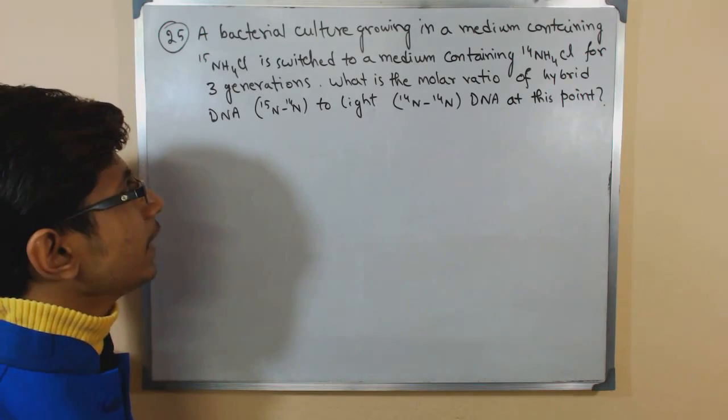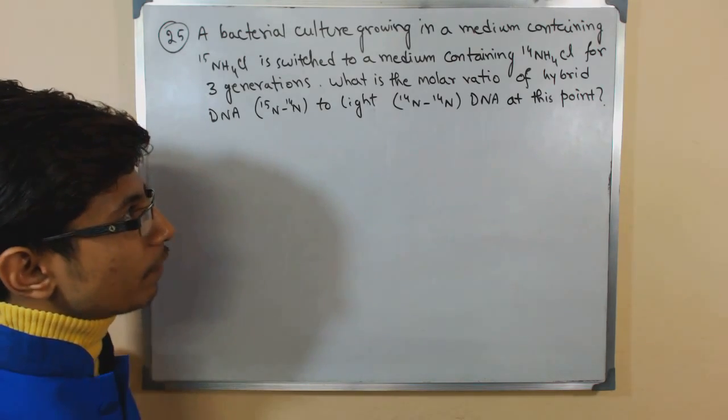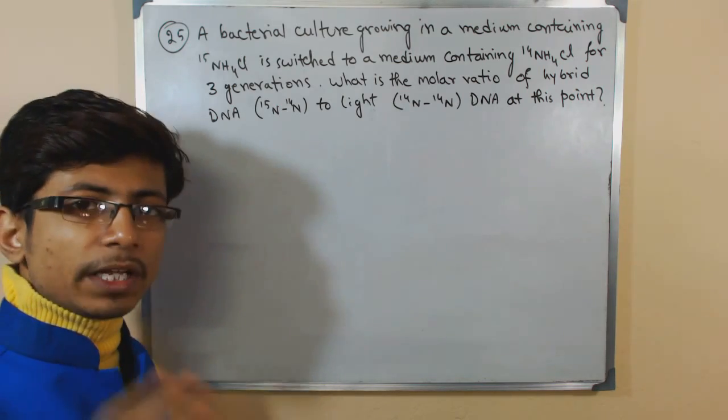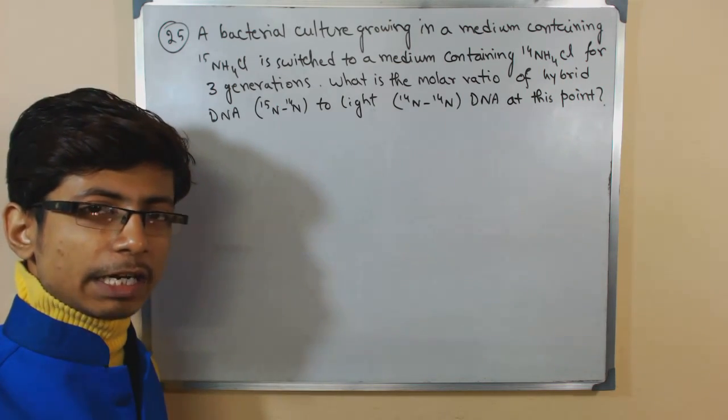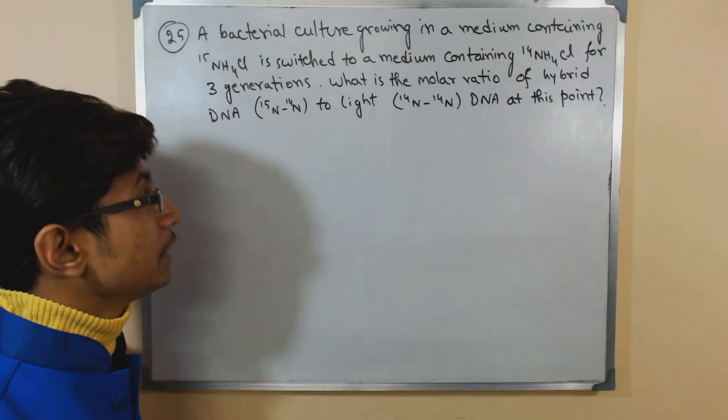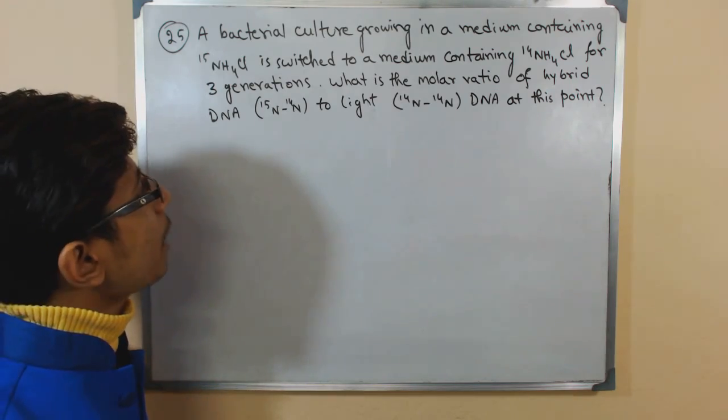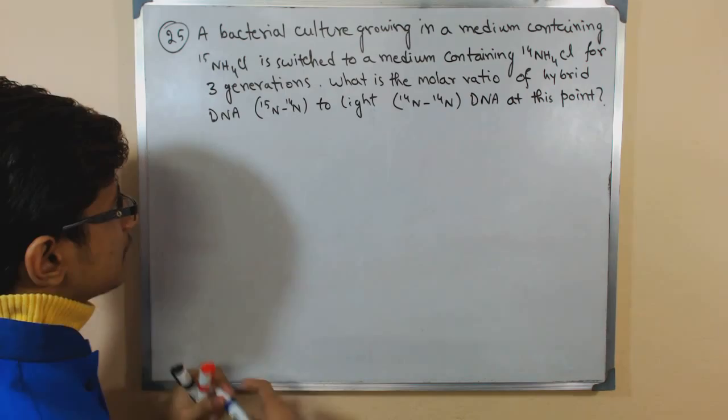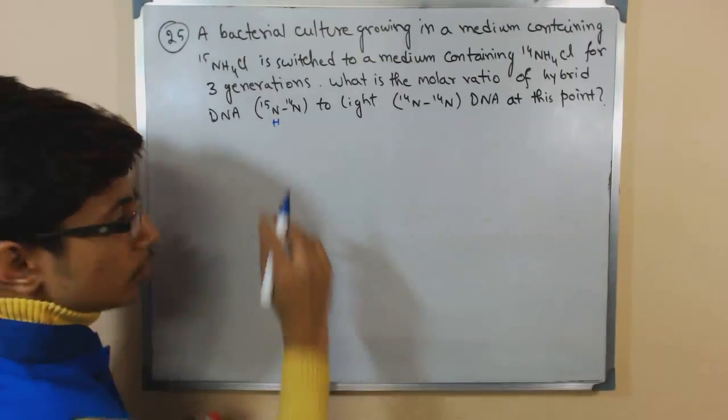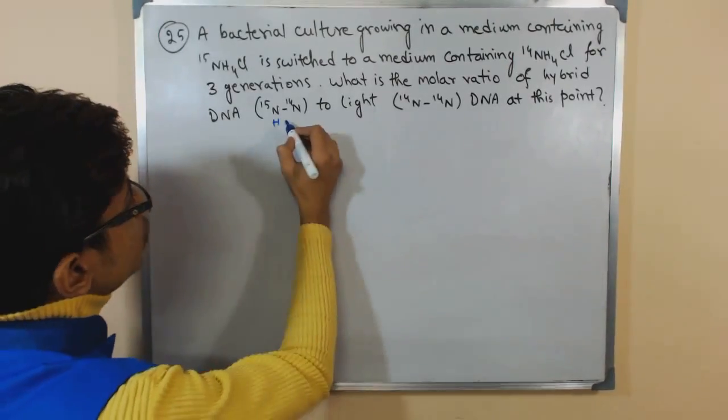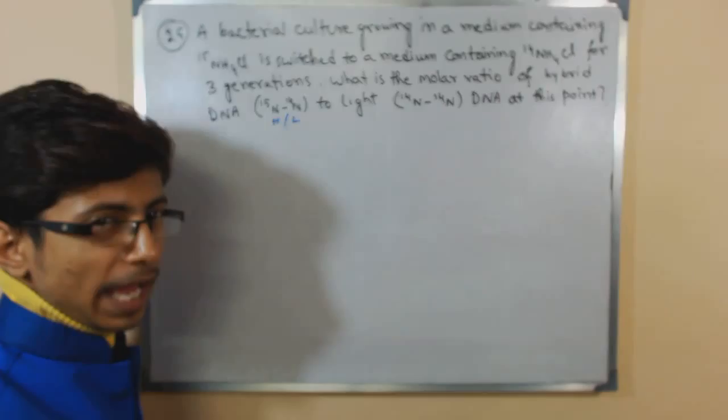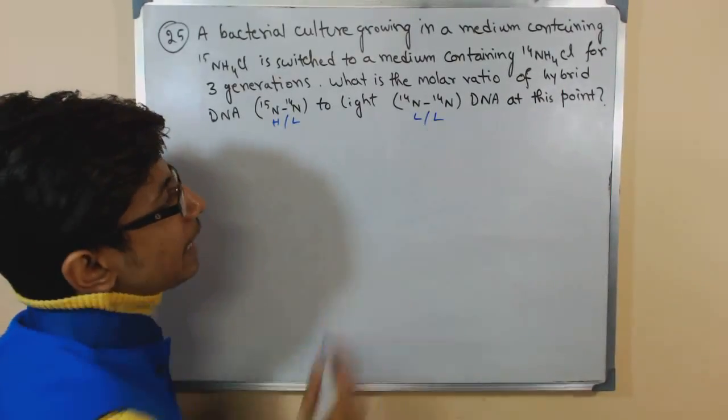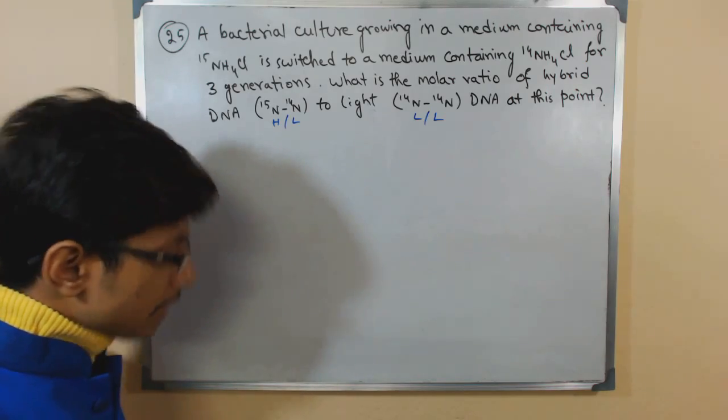So it is growing in N15H4Cl, then is switched to a medium containing N14H4Cl for three generations. So we are shifting the culture from heavy nitrogen containing media to light nitrogen containing media. Now what is the molar ratio of hybrid DNA, that is N15 and N14, to light DNA at this point?